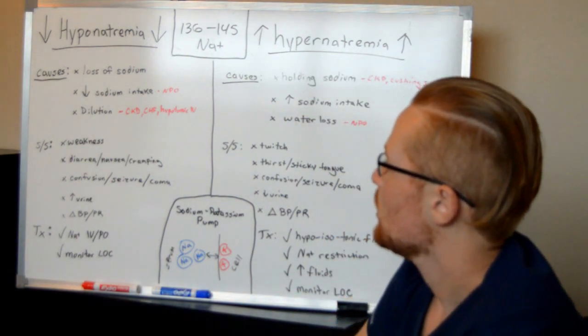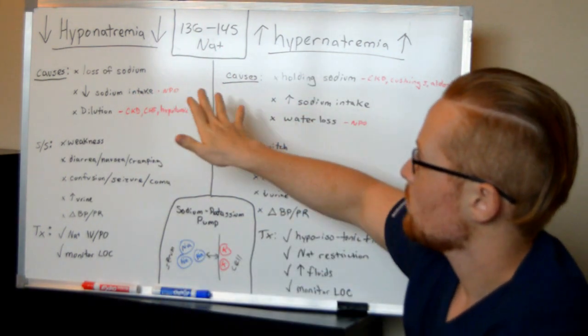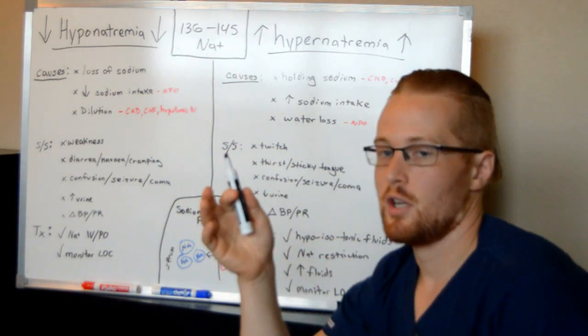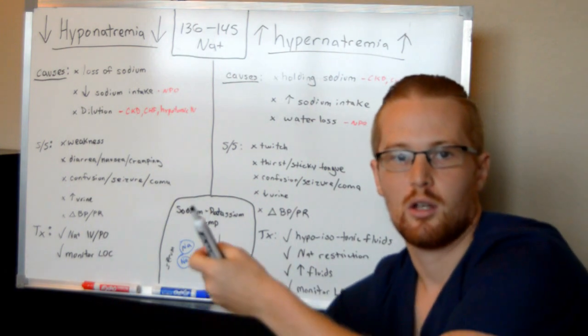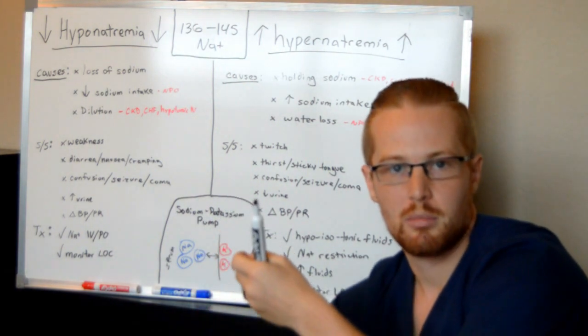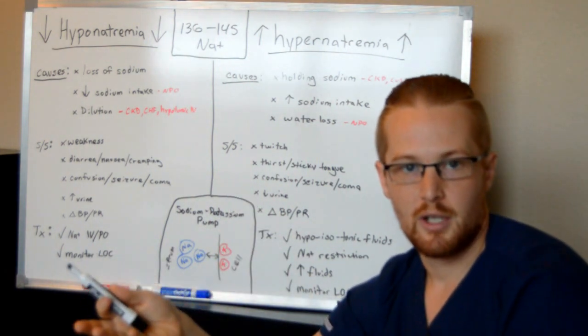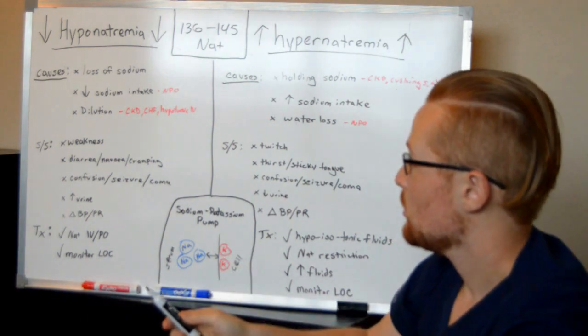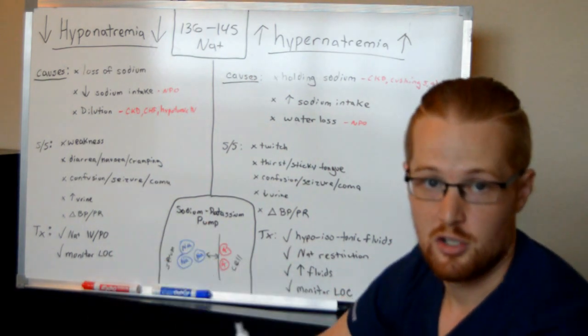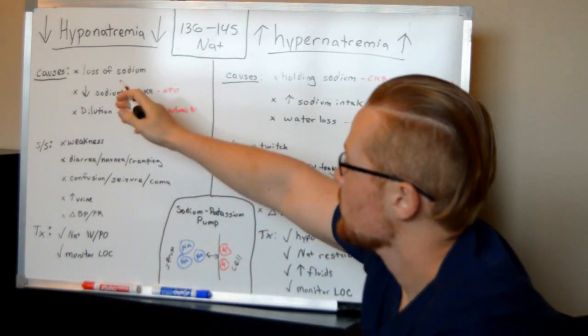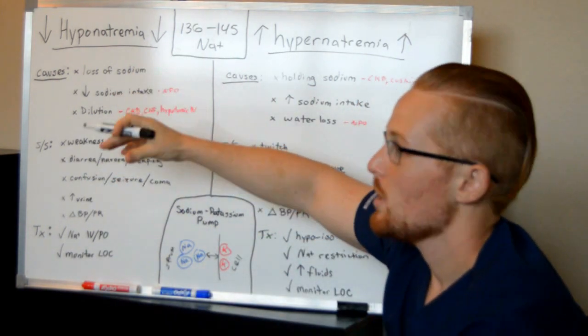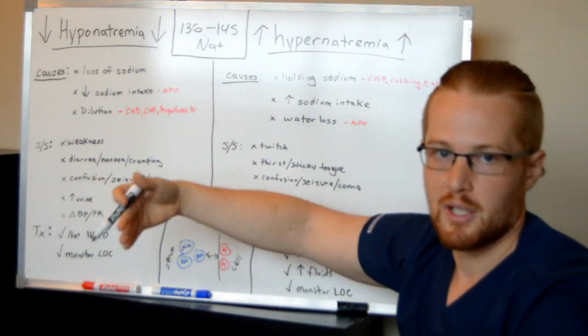So causes, well, there's some overlap here. Whenever there's fluid lost in the body, whether it's diarrhea, vomiting, lost from wounds or from burns, you're going to be losing fluid and you're going to be losing electrolytes. Sometimes the ratio changes based off the patient. So you'll see a cause of hyponatremia is loss of sodium through burns and vomiting and diarrhea.